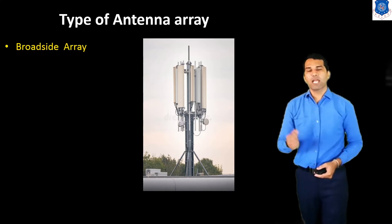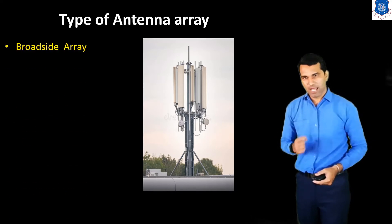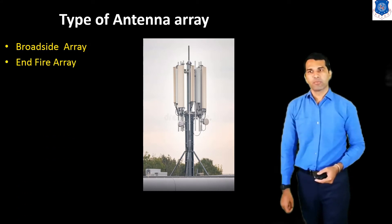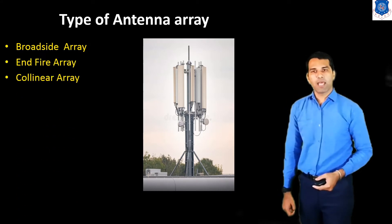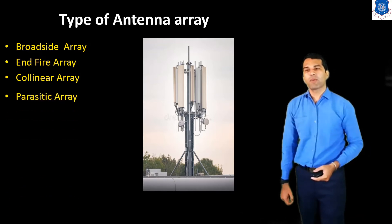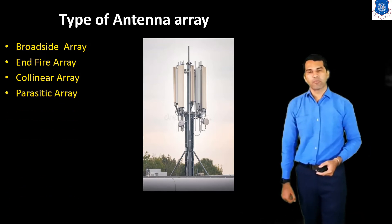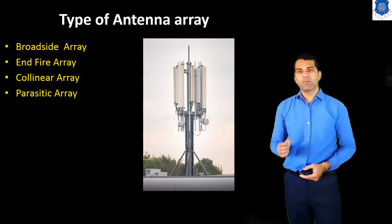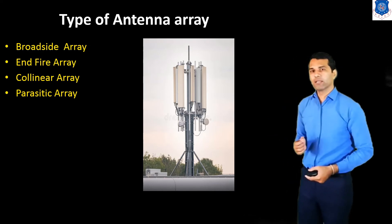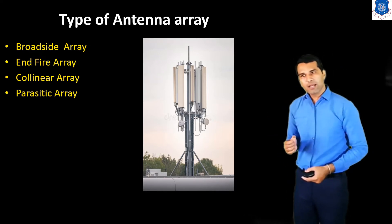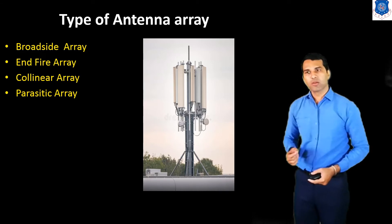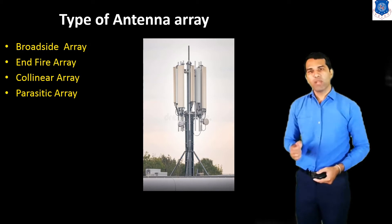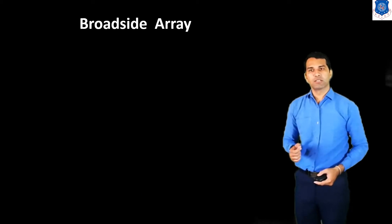Now we discuss about the types of the antenna array. The first type is the broadside array. The second one is the endfire array. Next one is the collinear array. And the last type is the parasitic array. So mainly, the antenna array is divided into these four categories: broadside array, endfire array, collinear array, and parasitic array.